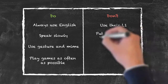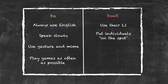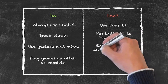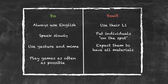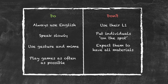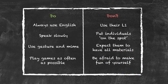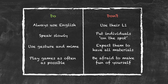Don't put young learners on the spot, as it can cause them to lose confidence very quickly — use pair work to reduce this. Don't expect them to have everything they need; at this young age, students may forget pens or paper, so be prepared. Don't be afraid of making fun of yourself — if you're teaching animal vocabulary, act out the animals yourself. Being self-conscious-free makes lessons far more entertaining.